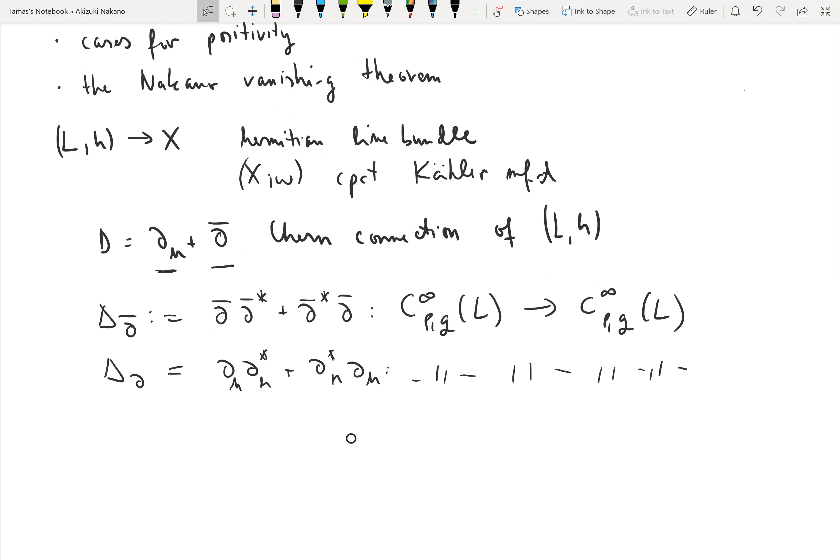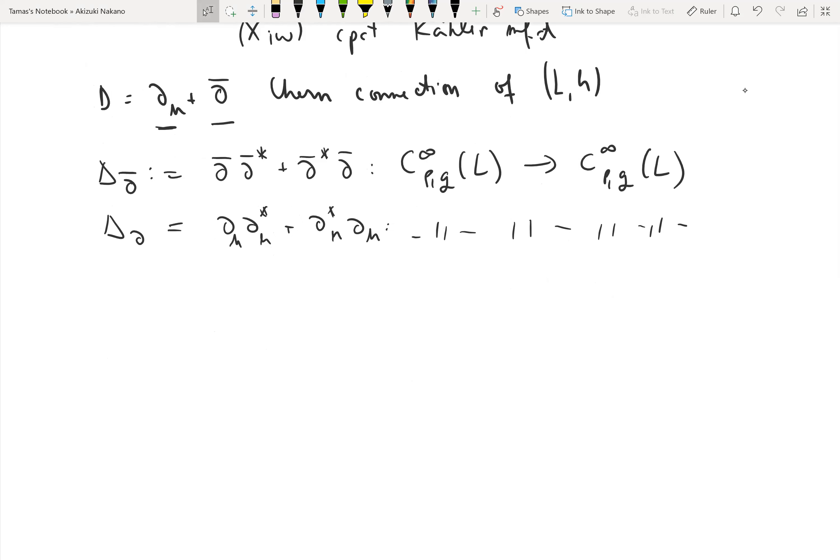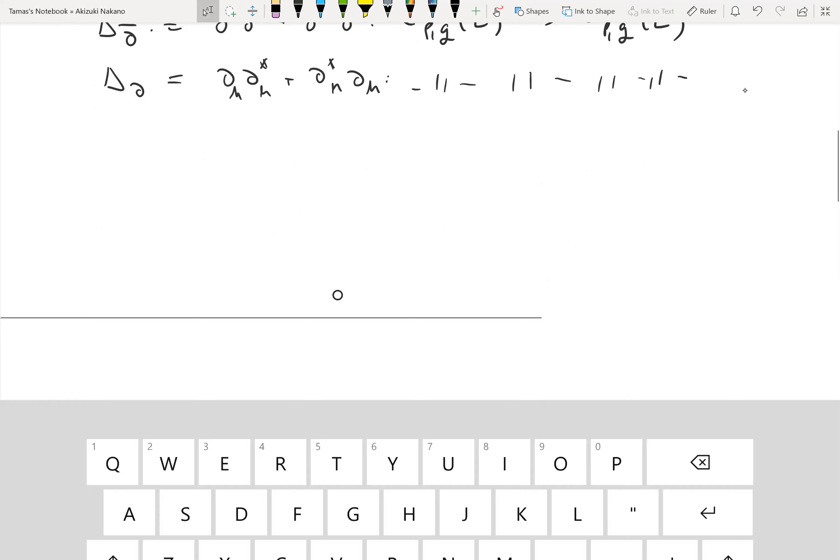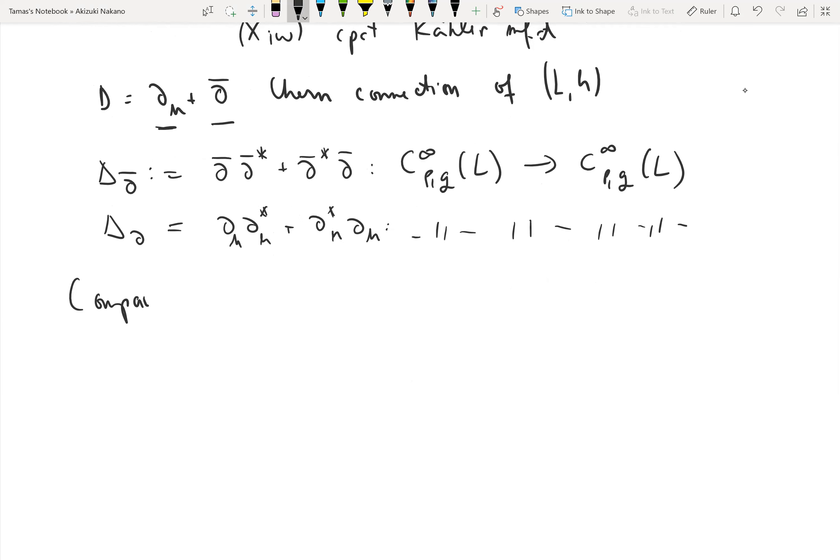The Akizuki-Nakano formula comes about by trying to compare these two Laplacians.